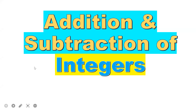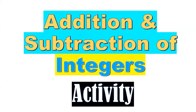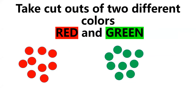Addition and subtraction of integers activity. First of all, you have to take cutouts of two different colors. You can take any color of your own choice, but I would prefer red and green. Take as many cutouts as needed for this activity when you perform it, and keep those cutouts ready.